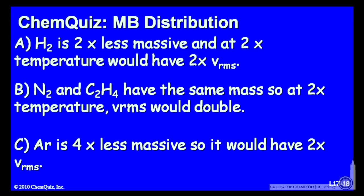Or B, nitrogen and ethane have the same mass, so at twice the temperature, the VRMS would double.